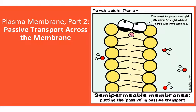Hi folks. In video one of this set of lectures we discussed the structure of the plasma membrane or cell membrane — that it's a phospholipid bilayer that has embedded proteins, carbohydrates, and steroids. In this video we're going to go over passive transport across the cell membrane, and I'll introduce you to the difference between passive and active transport.